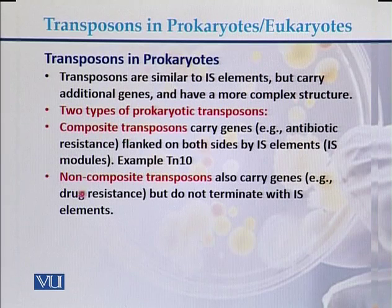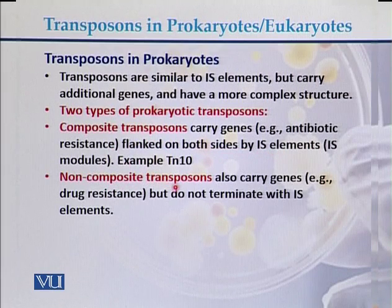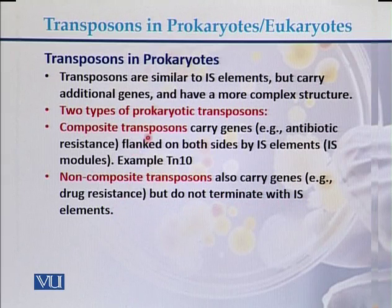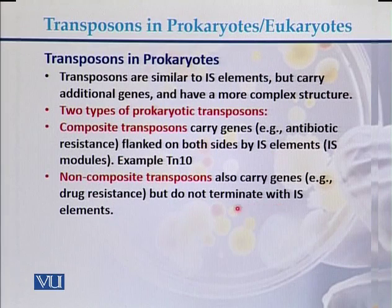The first type is composite transposons and the second type is non-composite transposons. Composite transposons carry genes like antibiotic resistance genes and are flanked on both sides by IS elements. Non-composite transposons carry genes like drug resistance but do not terminate with IS elements — this is the key difference between the two types.